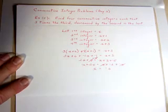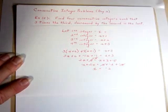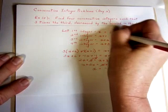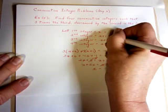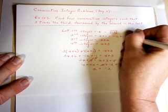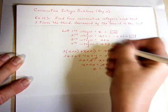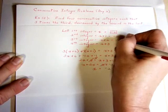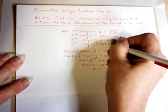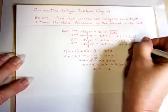Now we're going to take that solution and plug it back in the top, make the substitution for x. The first integer will be negative 2. The second integer is negative 2 plus 1, which is negative 1. The third integer is negative 2 plus 2, which is 0. And the fourth integer is negative 2 plus 3, which is positive 1.